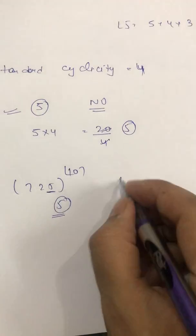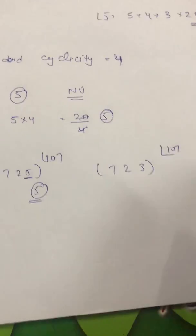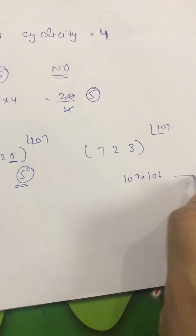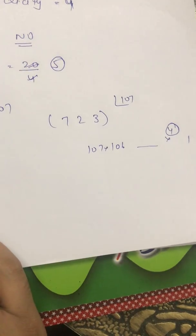But let me suppose if it is 723 raised to power 107 factorial. How to solve this? So, 107 factorial means 107, 106 up to 1, but there we will get 4 also.